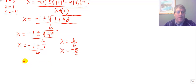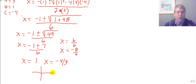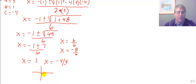So my two answers are x equals 1 and x equals negative 4 thirds. I've solved for the x-intercepts of my parabola. It is going to cross the x-axis at 1 and negative 4 thirds, which is about negative 1 and a third. Those are my two x-intercepts.